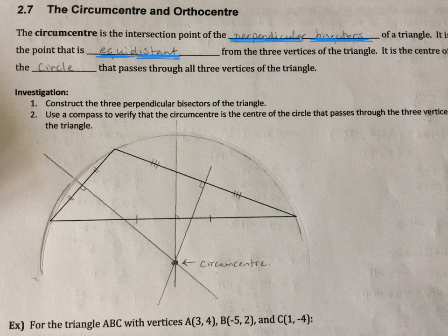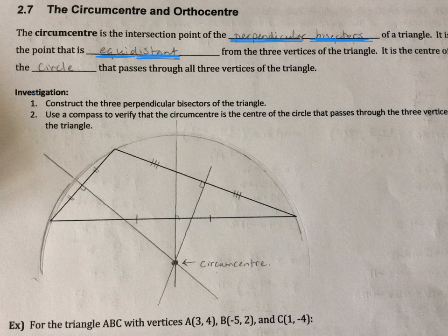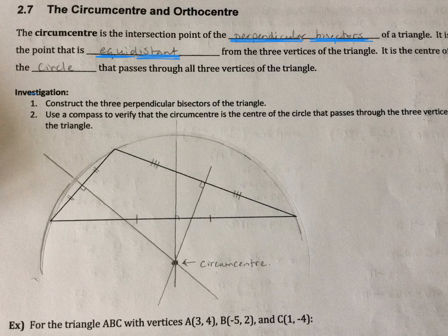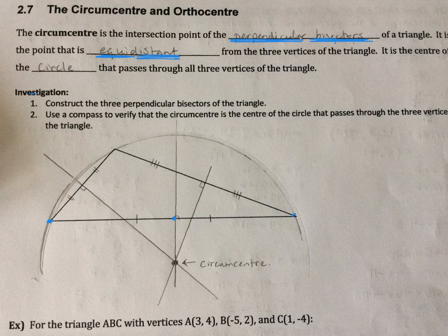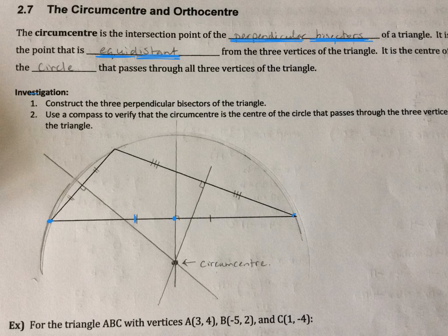So your job in this investigation is to construct the three perpendicular bisectors of the triangle. Now, I've already done that here. So what I did is I took my side length. Let's look at the bottom side of this triangle. What I did is I measured it, and then I figured out where the midpoint was.